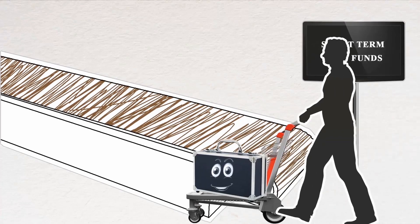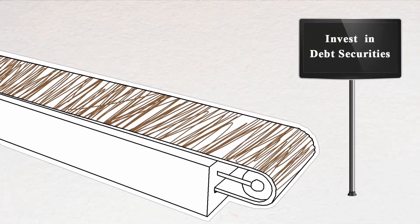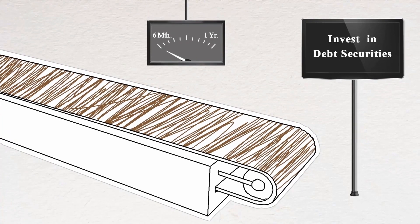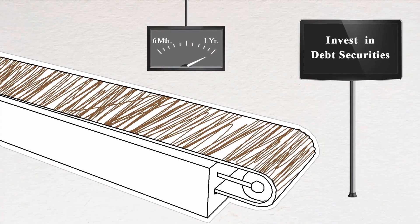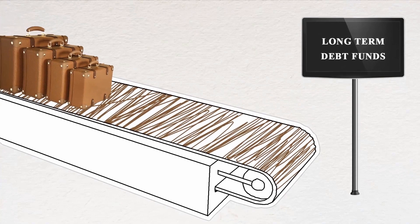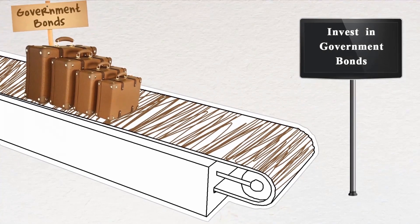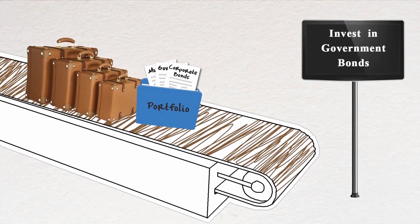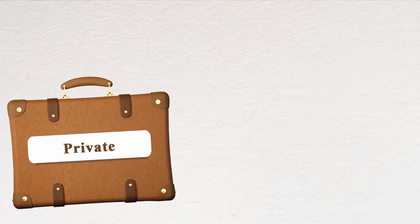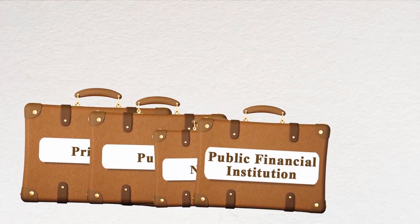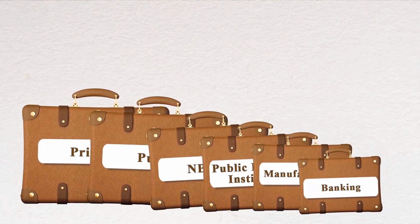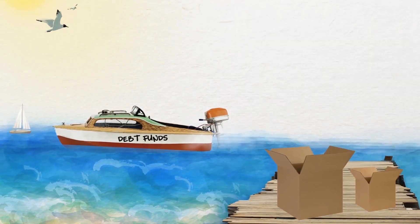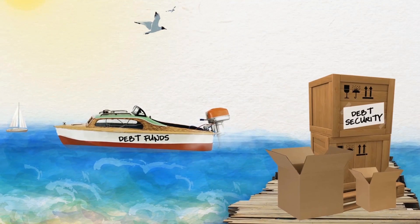Short-term debt funds invest in debt securities and are suited for investors with a short-term investment horizon of six months to a year. Long-term debt funds invest in government bonds and corporate bonds, covering a portfolio of predominantly debt securities across different categories and sectors, and are suitable for investors with a horizon of at least a year. Another important way to classify debt funds is based on the kind of debt securities they invest in.